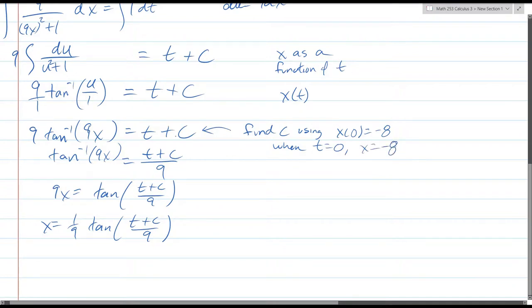I'm going to plug it into this line here. So that's 9 tangent inverse of 9 times negative 8 equals t plus c, and t is 0 plus c.